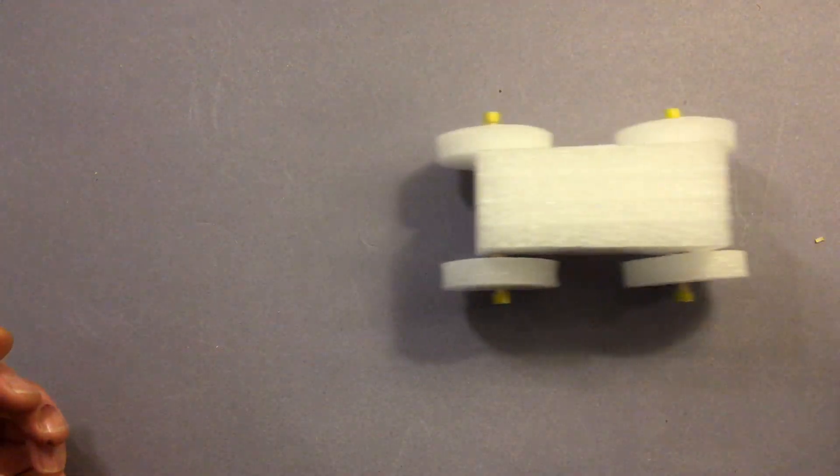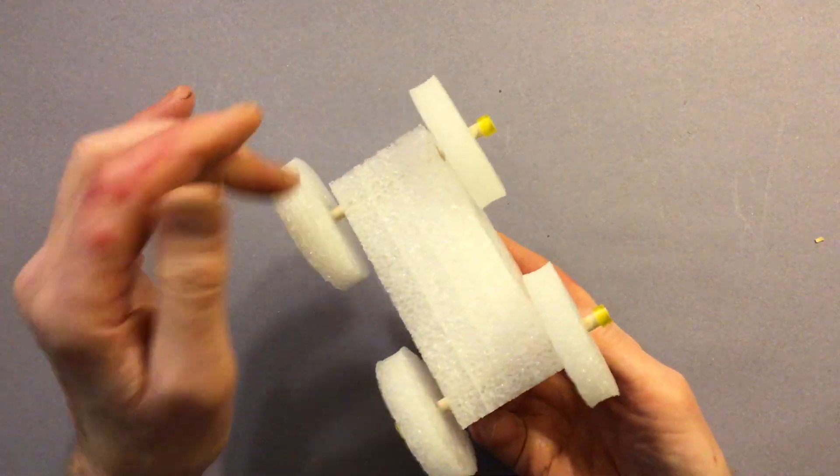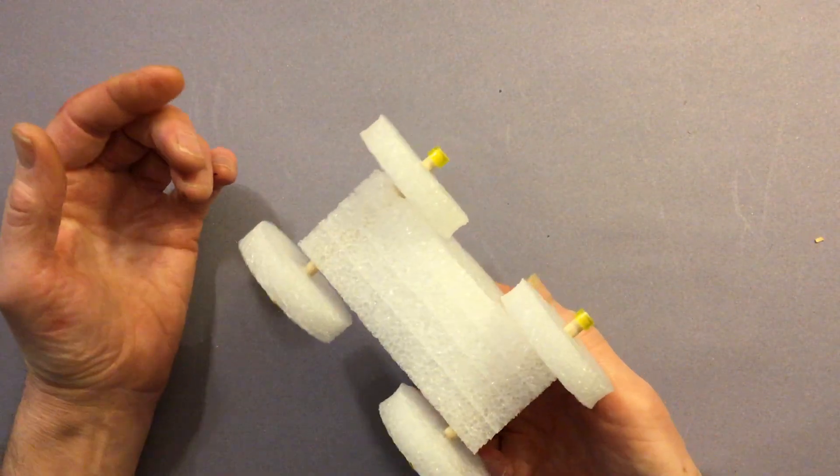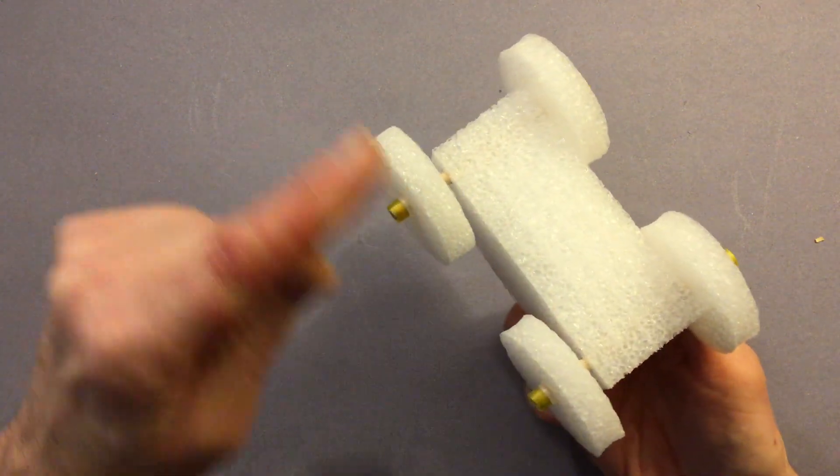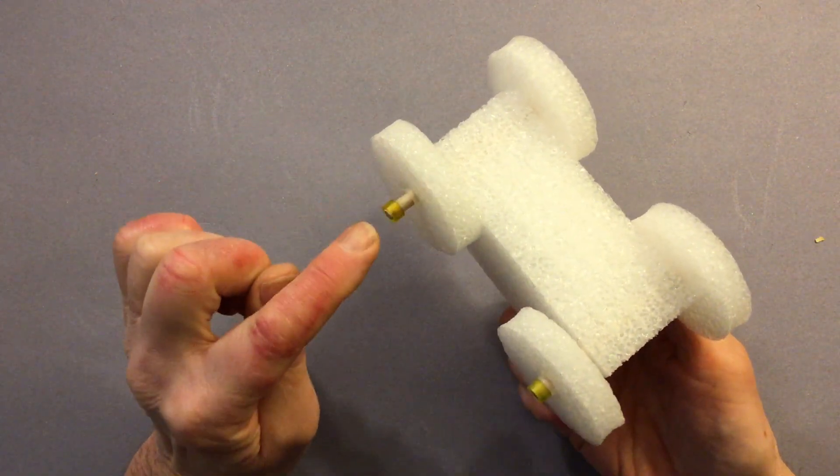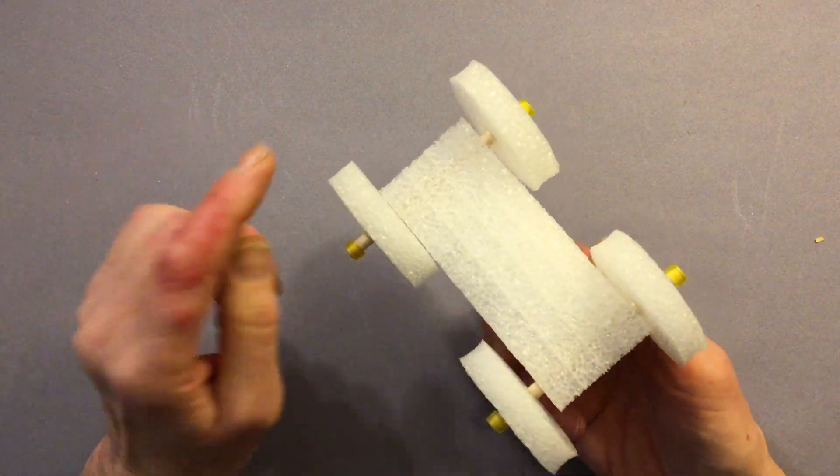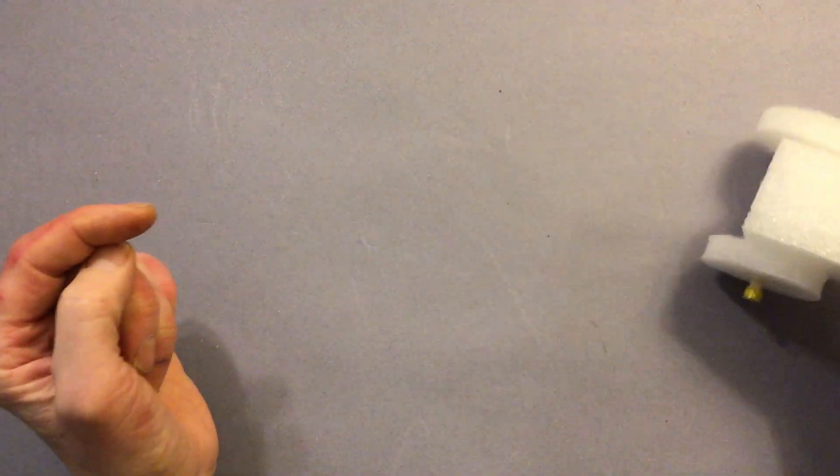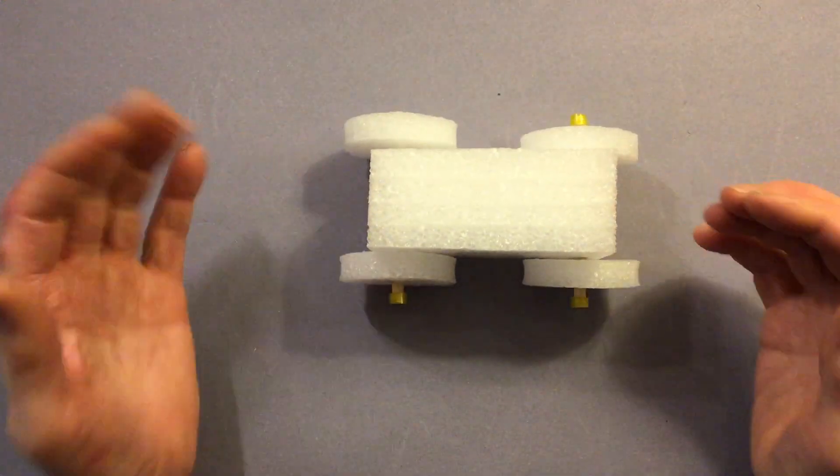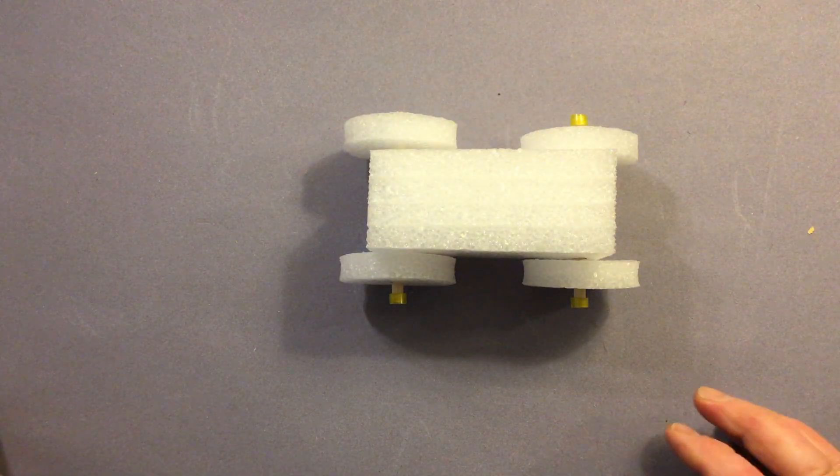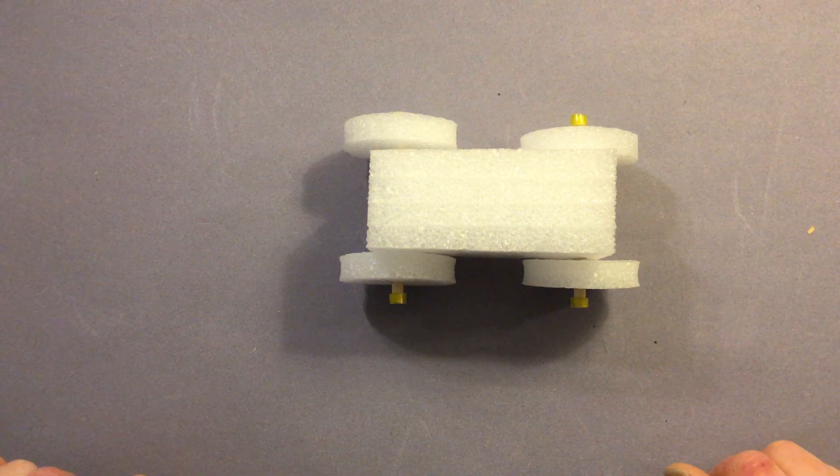Well that's our basic vehicle there which should run quite happily along. The bearings inside are simply reducing the frictional force which would normally be the rubbing force between the wheel and the axle. Because they're made of smooth plastic and the axles are smooth, there's very little friction so the vehicles move quite freely. So that's the basic vehicle completed and the next clip will show how to attach body work to it.